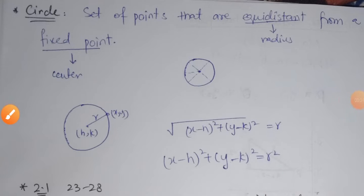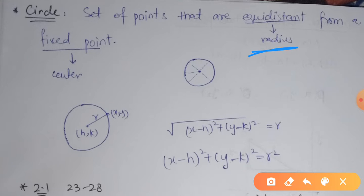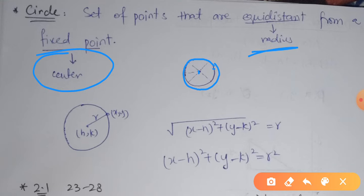The next topic is 16.2.1: a circle. A circle is defined as a set of points that are equidistant from a fixed point. That fixed distance is named as the radius of the circle and the fixed point is named as the center of the circle. If we take the distance of any point on the boundary of the circle from the center, it will be equal to the radius.